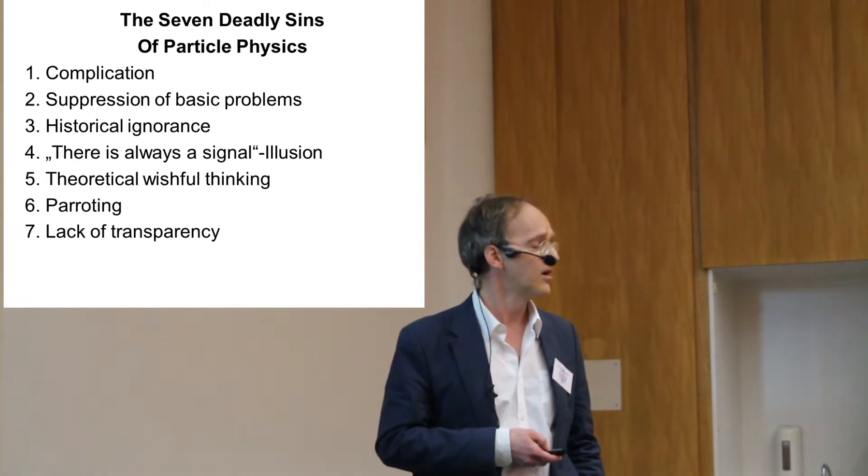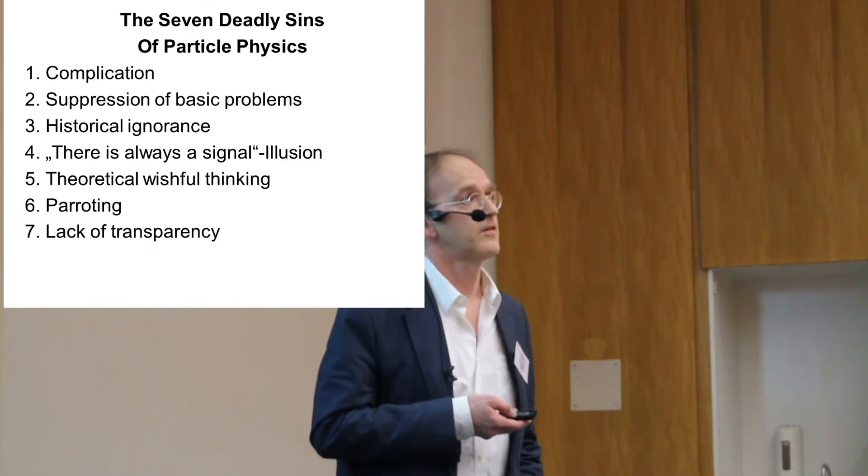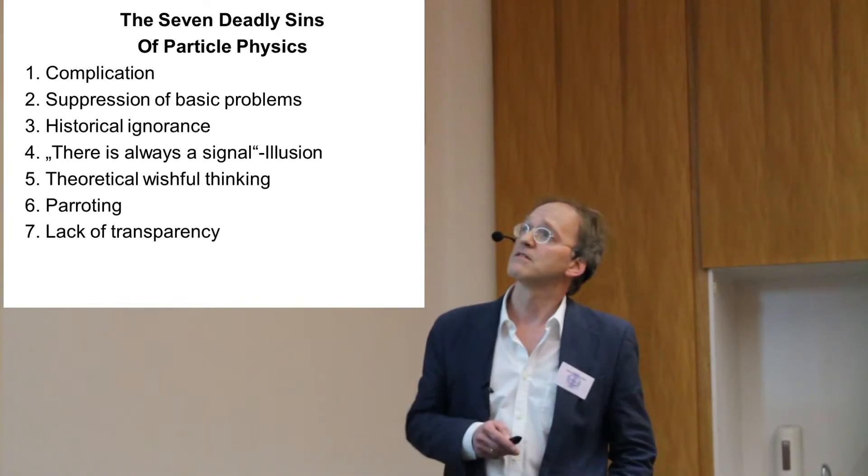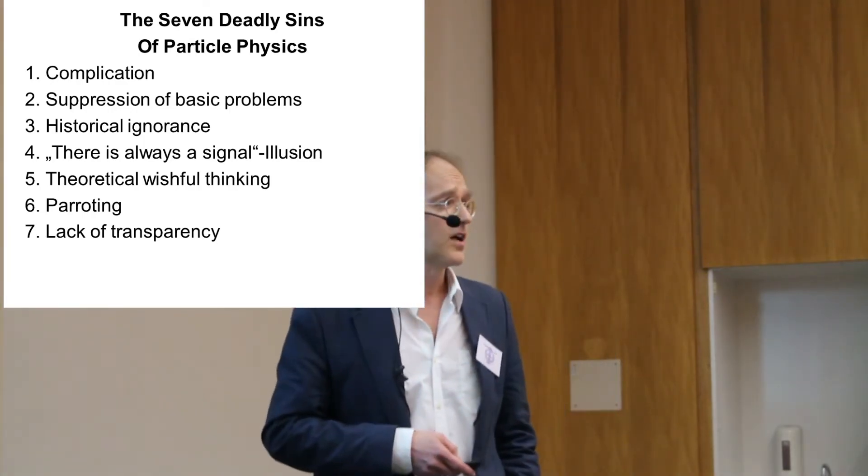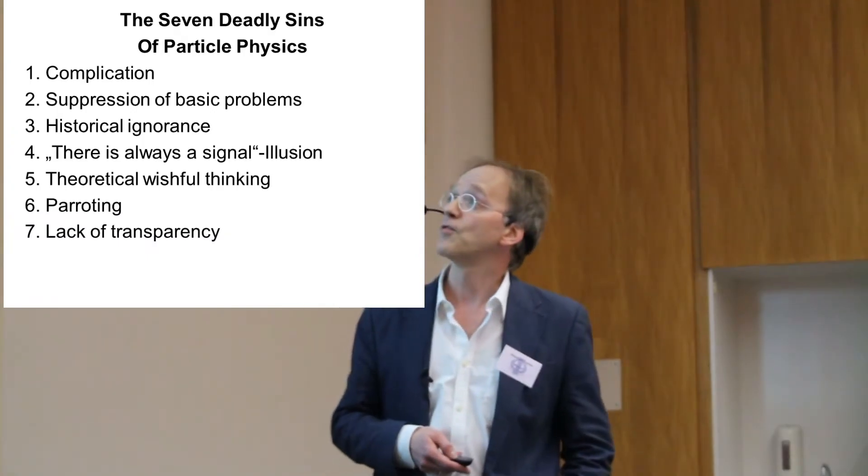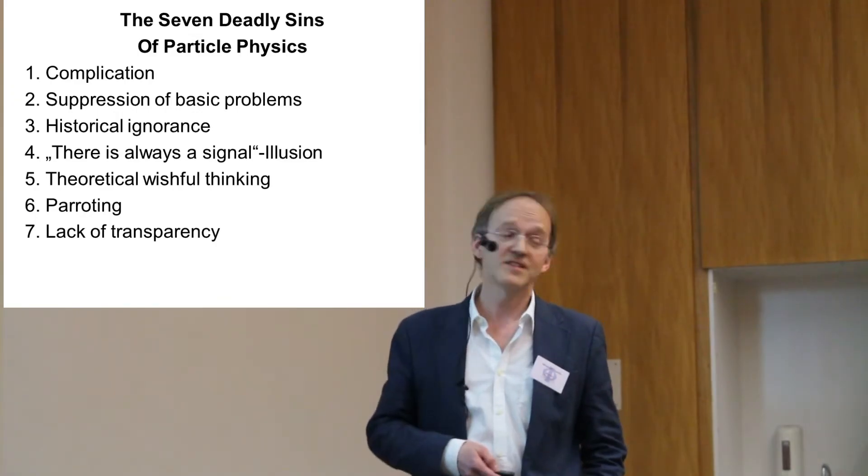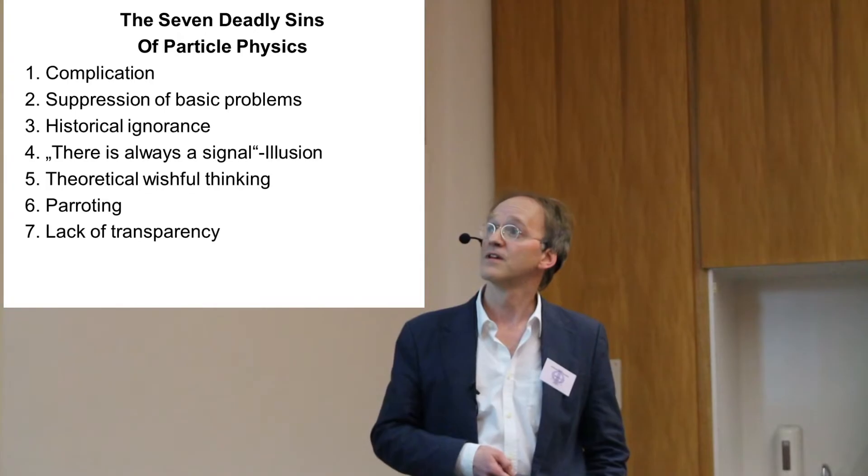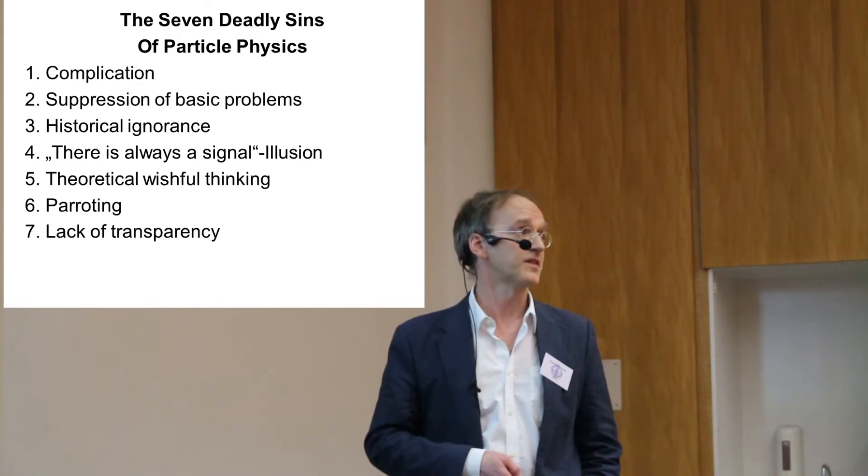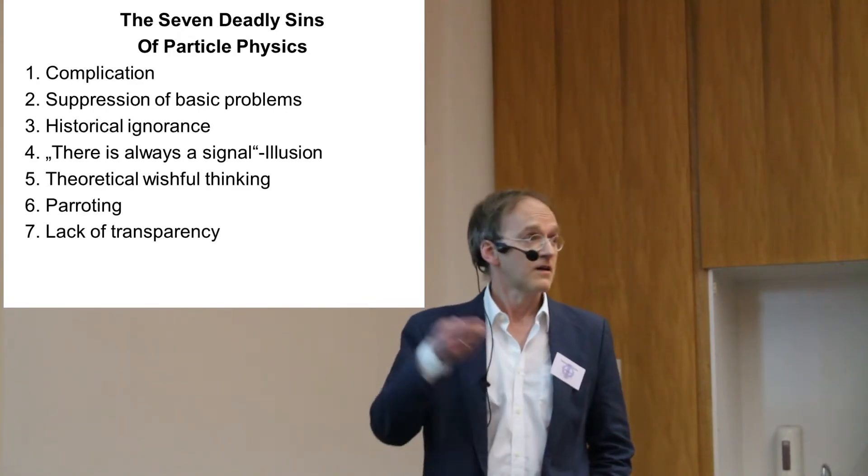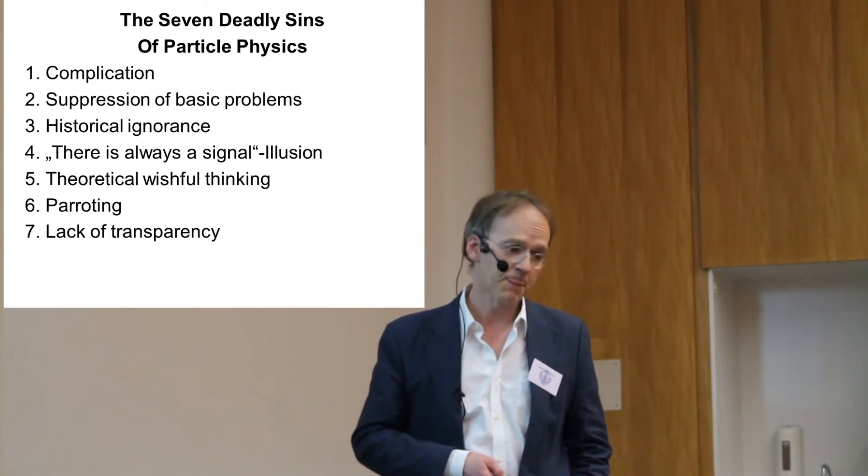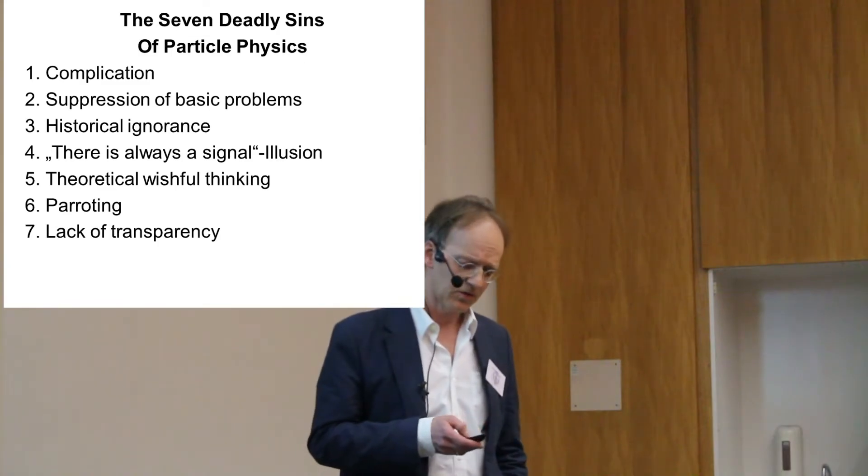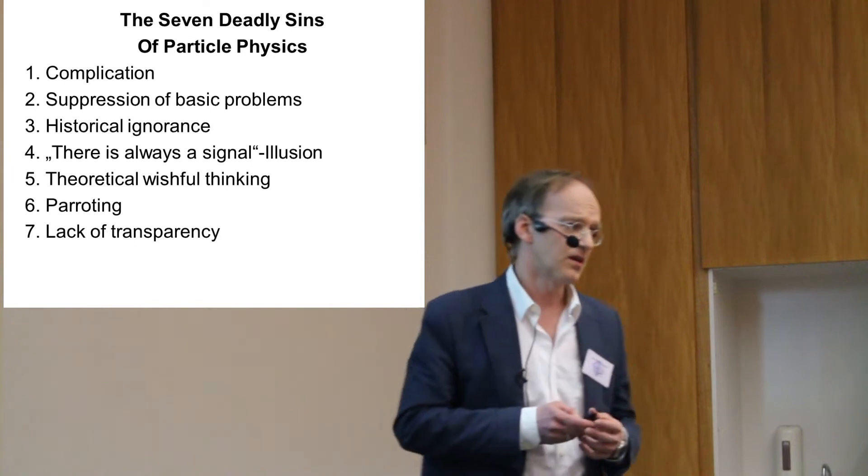The standard model is hilariously complicated. Good physics is simple. All the real breakthroughs in physics have simplified a lot of the laws of physics. They haven't added these complicated parameters. We have a suppression of basic problems. I think there is a lot of historical ignorance about the methods of physics. There is always a signal illusion. Physicists are kind of fooling themselves with very tiny signals they're going to interpret. There is a lot of theoretical wishful thinking along the concepts I named before, these metaphorical labels like isospin and hypercharge and strangeness and whatever it is. There is certainly a lot of parroting and groupthink in the community. And there is a total lack of transparency when you go to the raw data.